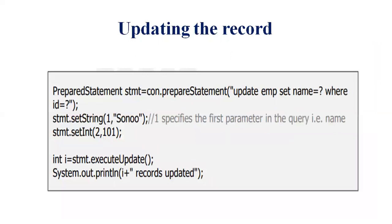Updating a record: PreparedStatement stmt = con.prepareStatement with the SQL: update emp set name=? where id=?. Based on the id, we are updating the name value. We call stmt.setString(1, 'Solon') to set the new name value, and stmt.setInt(2, 101) to specify the id — the record with id 101 will be changed. Then int i = stmt.executeUpdate() executes the update, and System.out.println confirms the record is updated.